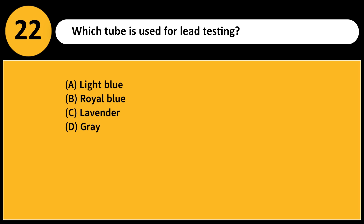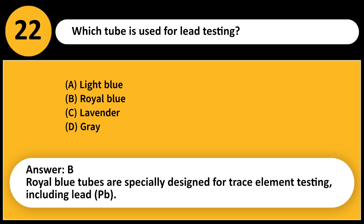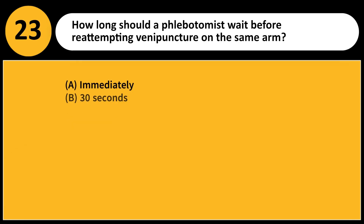Which tube is used for lead testing? A. Light blue. B. Royal blue. C. Lavender. D. Gray. Answer: B. Royal blue tubes are specially designed for trace element testing, including lead (Pb).